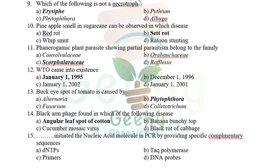Which of the following is NOT a necrotroph? Necrotrophs get nutrients from dead and decaying organic matter and don't need a living host. Pythium, Albugo, and Phytophthora are all necrotrophs. The one that is NOT a necrotroph is Erysiphe — powdery mildew — which is a biotroph (obligate parasite) because it strictly needs a living host for survival.